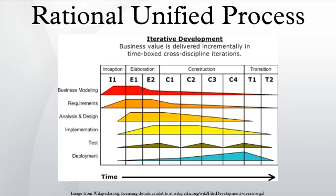Transition Phase: The primary objective is to transition the system from development into production, making it available to and understood by the end user. The activities of this phase include training the end users and maintainers, and beta testing the system to validate it against end user expectations. The product is also checked against the quality level set in the inception phase. If all objectives are met, the product release milestone is reached and the development cycle is finished.